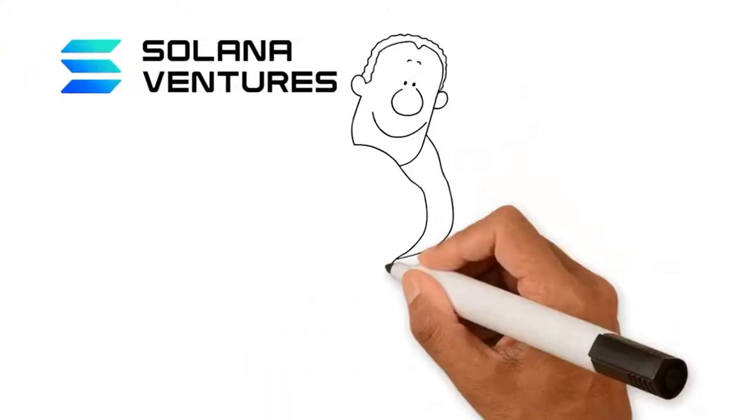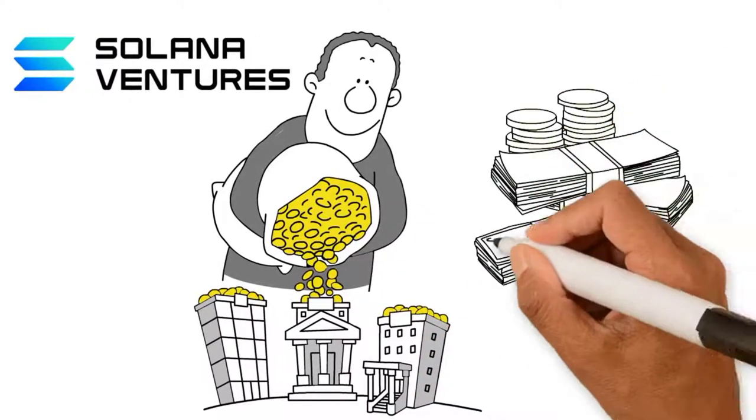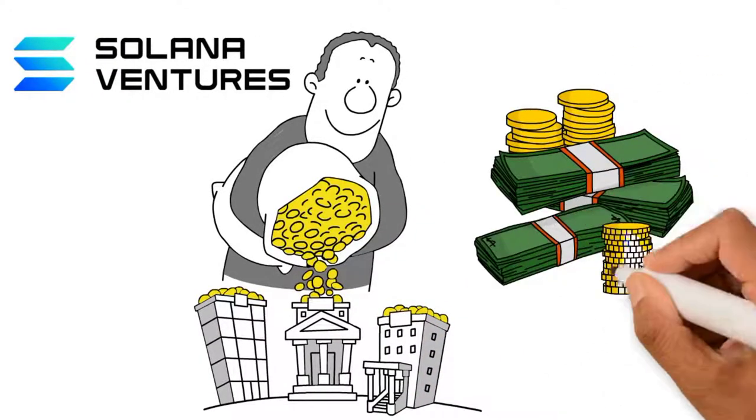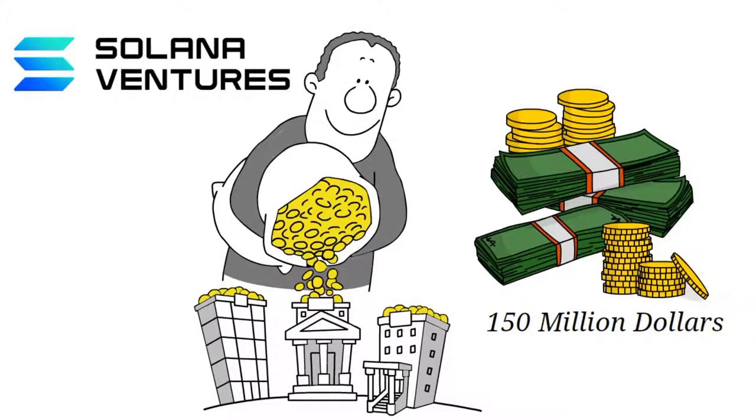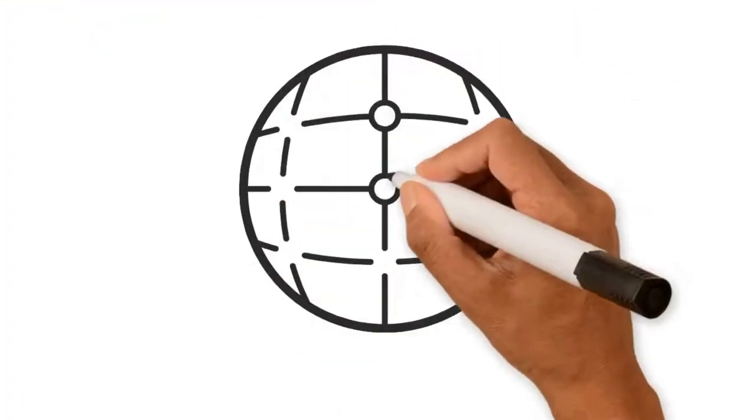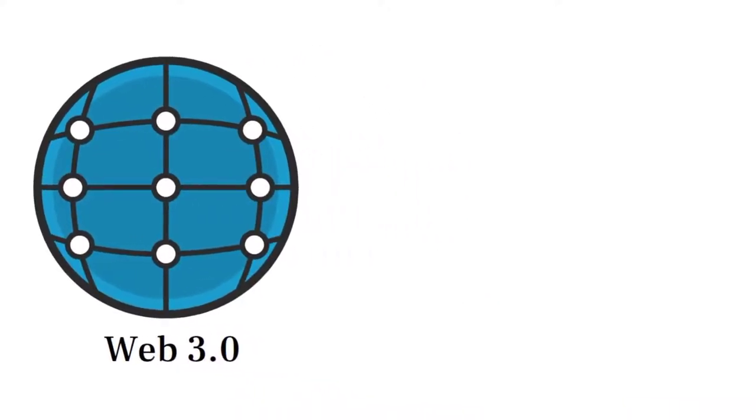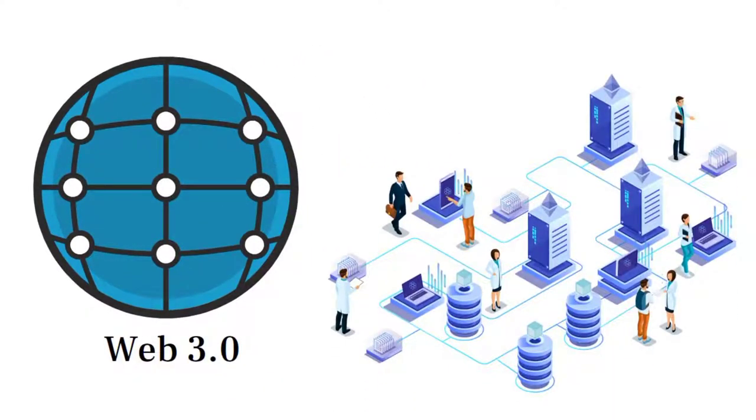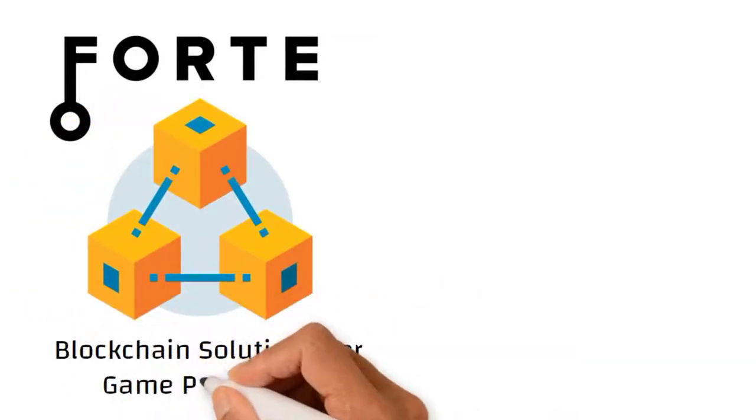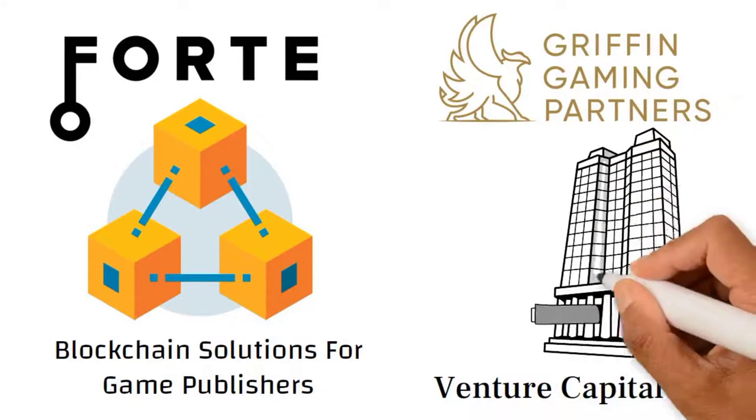Apart from all this, Solana Ventures, which is the strategic investment arm of Solana Labs, is launching a $150 million fund to invest in Web 3.0 game builders with Forte and Griffin Gaming Partners. Web 3.0 is sometimes described as the new generation of the internet, with the aim to be a decentralized version of the virtual world. Forte is a provider of blockchain solutions for game publishers while Griffin Gaming Partners is a venture capital firm focused on investing in the global gaming market.